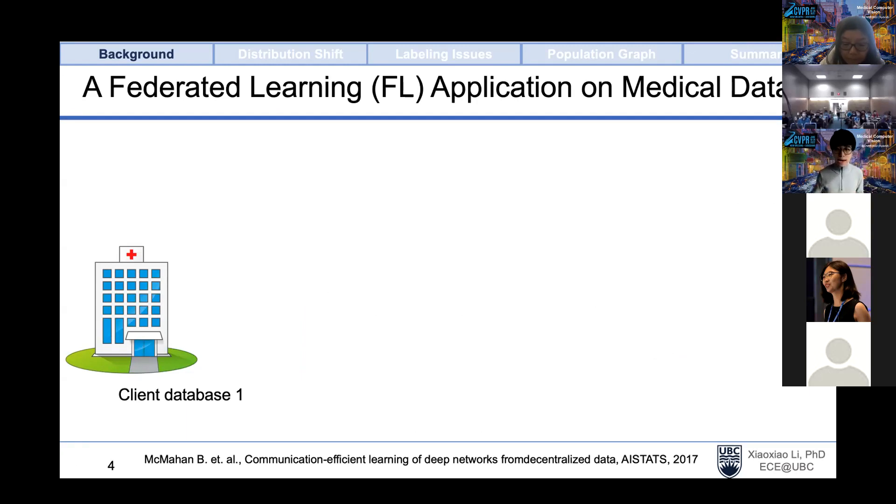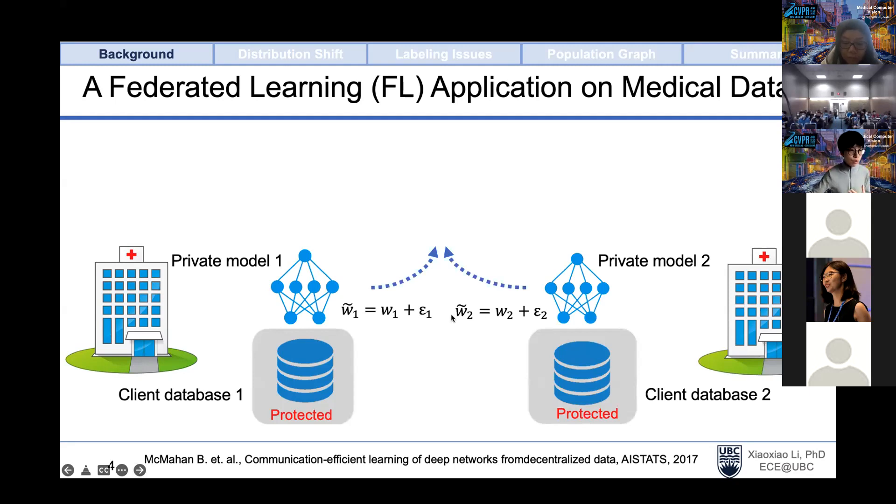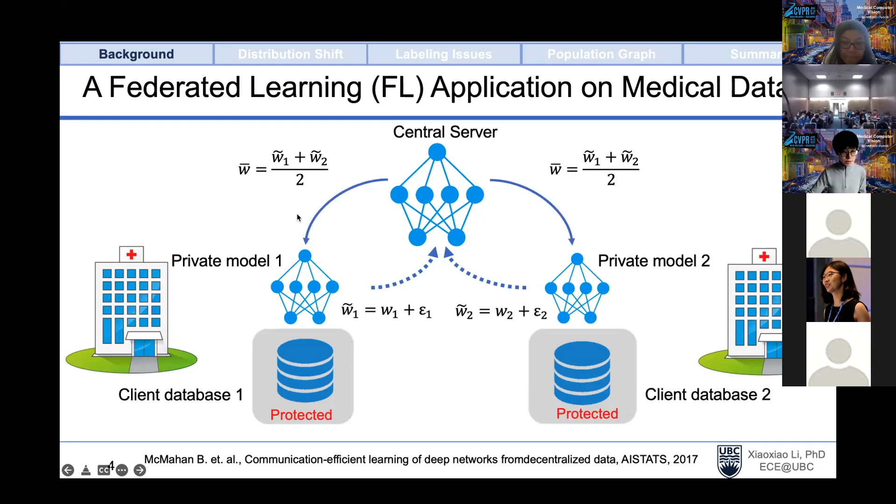I want to introduce a new learning scheme called Federated Learning that allows multi-center to collaboratively train machine learning models without data sharing. Suppose we have two hospitals, client one and client two. Each hospital has their local protected database. They train private models locally using their protected data and using privacy protecting techniques on their model parameters, then share the protected model parameters to our central server. The central server aggregates the shared model parameters from local clients, such as using an averaging strategy, and then broadcasts the averaged model parameters back to clients. We perform this updating, uploading, and broadcasting iteratively until convergence.